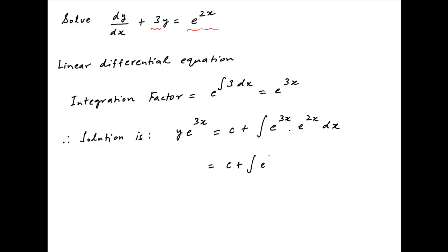The right side simplifies to C plus the integral of e^5x dx, and this equals C plus e^5x/5.